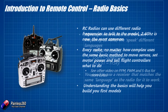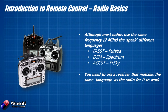Each radio talks its own language over the 2.4 gigahertz frequency spectrum, and that language is different for every radio and receiver manufacturer. You can't buy a receiver designed for Futaba and get it working with Spektrum, and you can't buy a Turnigy receiver and expect it to work with Futaba or Spektrum. You have to buy the receiver that understands the same language as the radio. You'll hear about things like FASST from Futaba, DSM, DSM2 and DSMX from Spektrum, and ACCST from FrSky and Turnigy. Make sure your receiver will bind to your radio.